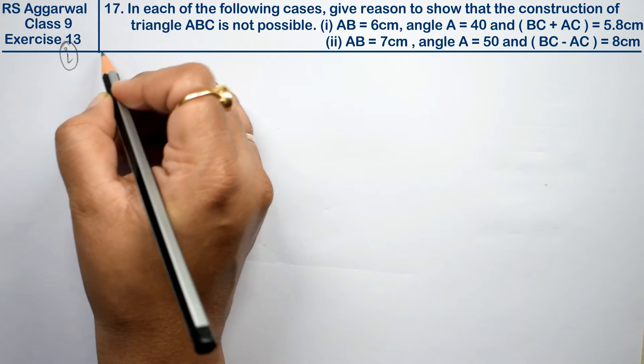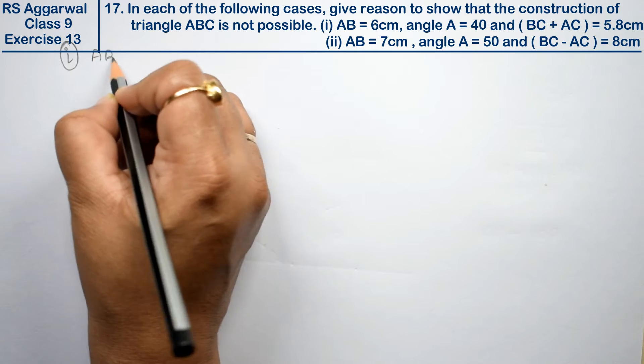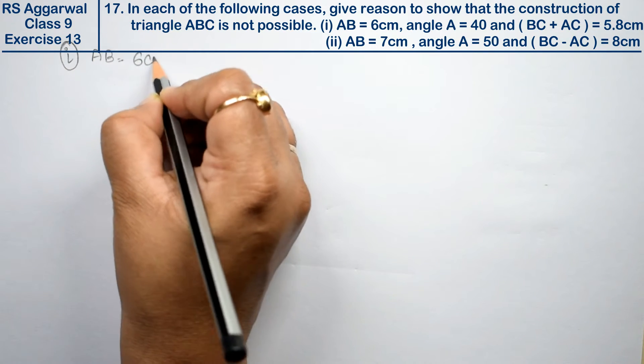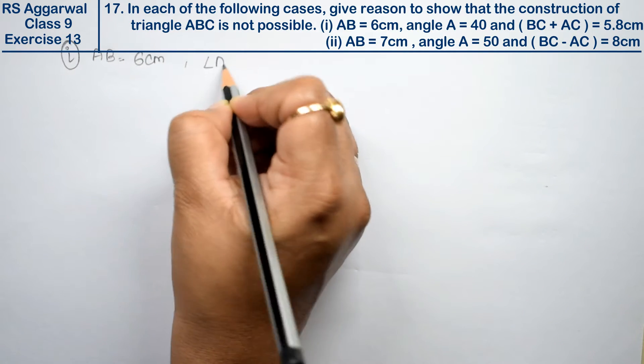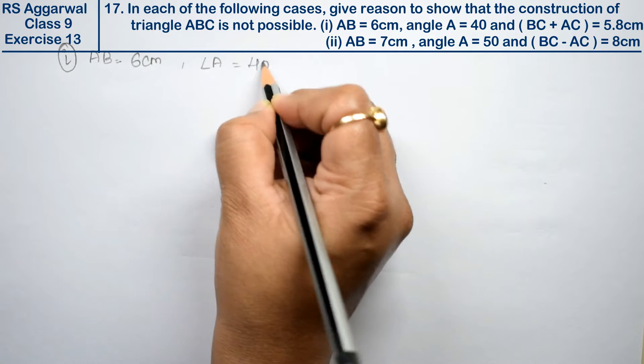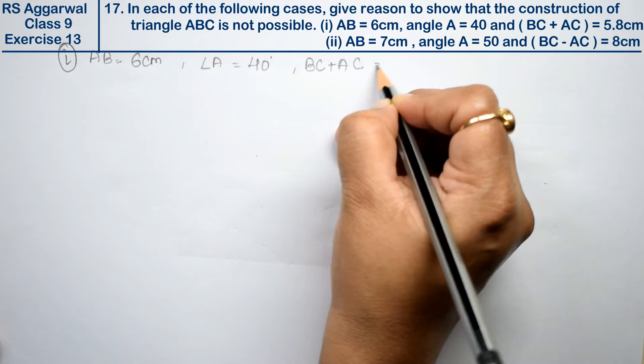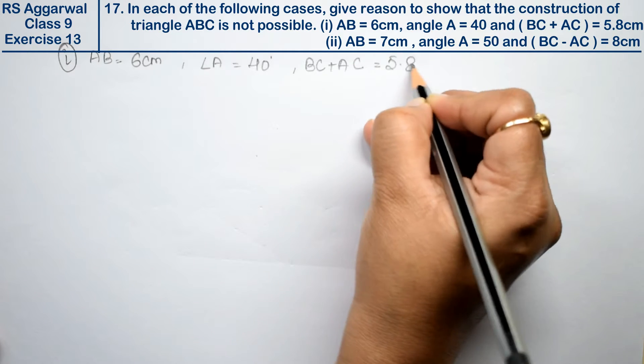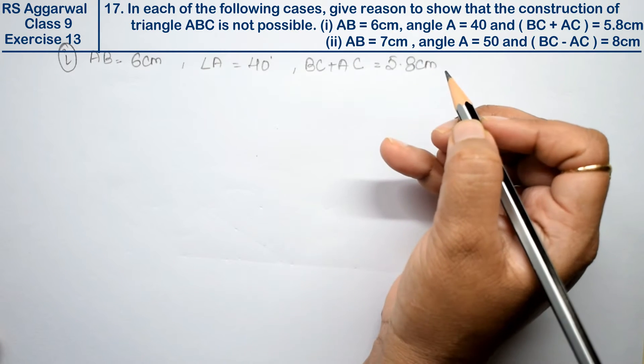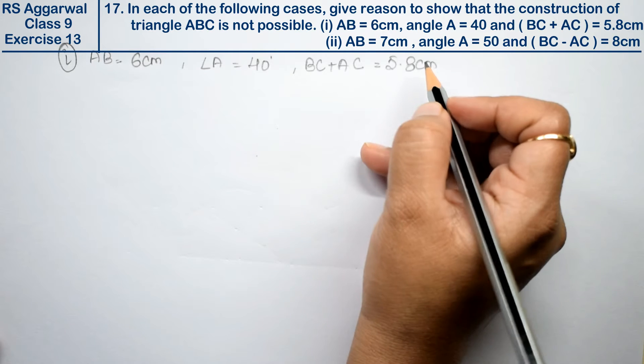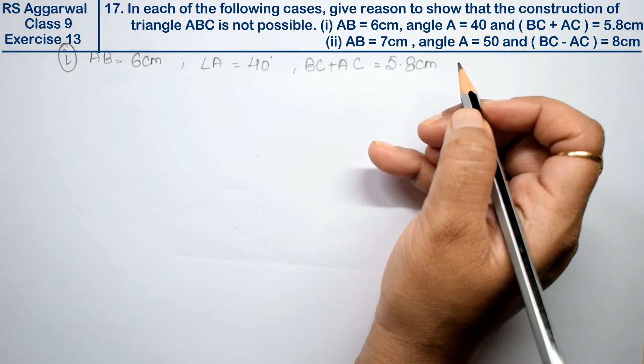First part: we have AB equals to 6 cm, angle A equals to 40 degrees, and BC plus AC equals to 5.8 cm. We have learned that the sum of two sides will be greater than the third side.